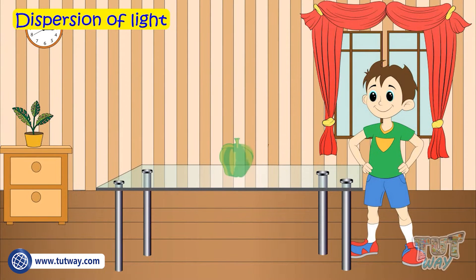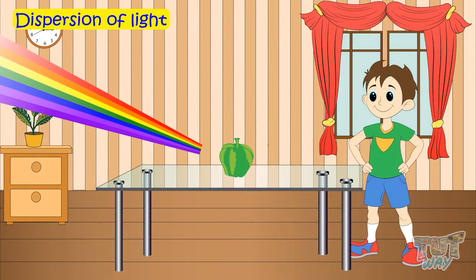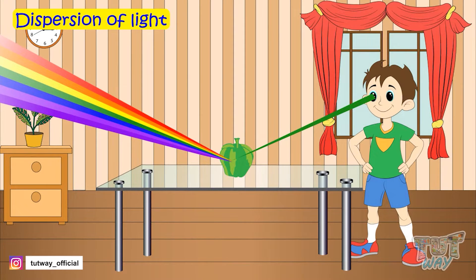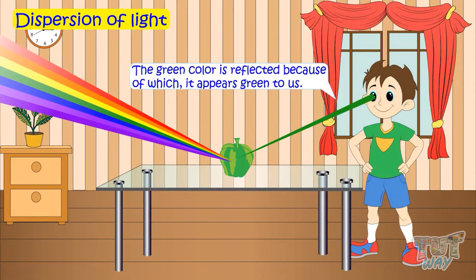If an object is green, it will absorb all the other colors except for green. And green color is reflected, because of which it appears green to us.